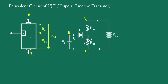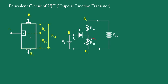The resistance of the silicon bar is represented by two series resistors: RBB equals RB1 plus RB2, which is known as the inter-base resistance. Resistor RB1 is the resistance of the bar between base B1 and the emitter junction — that is, of this part. This is a variable resistance because its value depends upon the bias voltage across the PN junction, that is, between emitter and base B1.